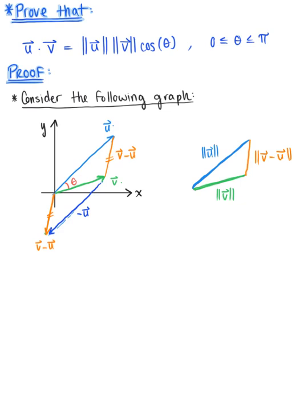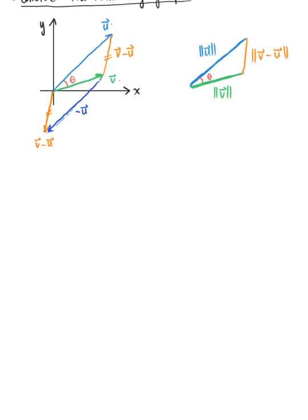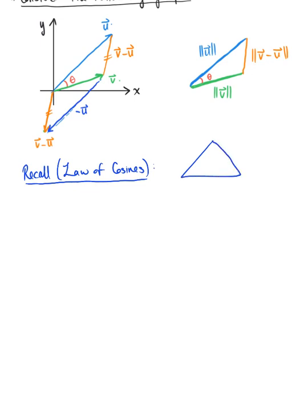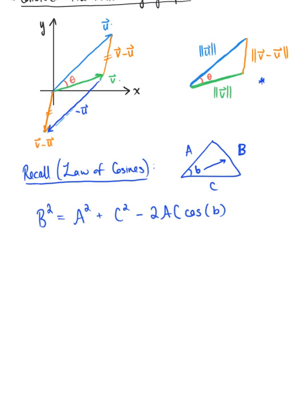We now need to establish a formula relating the side lengths of this triangle. Fortunately, we have a formula for non-right triangles — the law of cosines. Consider a non-right triangle with side lengths a, b, and c, with angle B associated with side length b. The law of cosines tells us that b² = a² + c² − 2ac·cos(B).